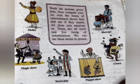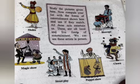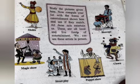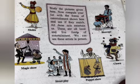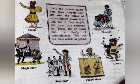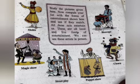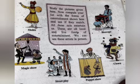Study the pictures given here and compare your list with the forms of entertainment shown. These are all local and live forms of entertainment, which we can see in person — such as a magic show, street play, puppet show, clown, and bioscope. We use radio, TV, computers, and projectors to enjoy programs on these devices. These programs are performed somewhere far away, filmed and recorded there, and then transmitted to us. Radio, TV, etc. are means of entertainment that transmit programs.